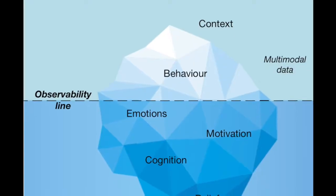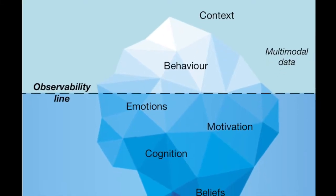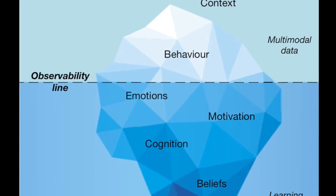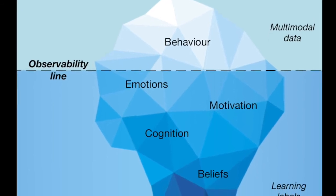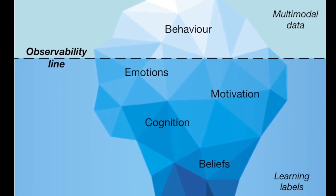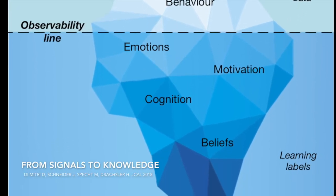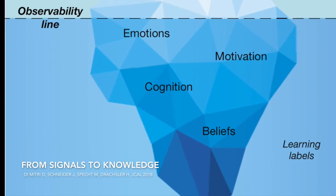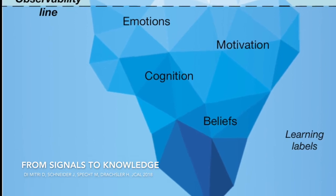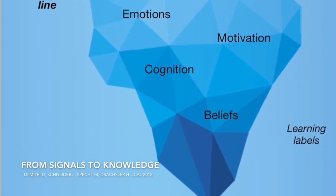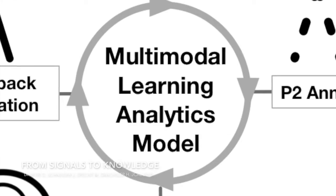What sensors cannot directly measure are the learning states, which are either cognitive or metacognitive dimensions related to learning. These aspects stand below the observability line.